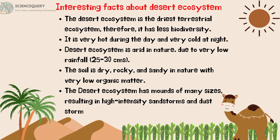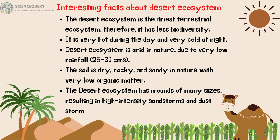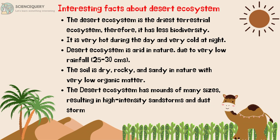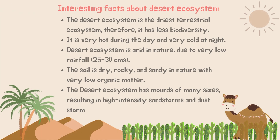Some interesting facts about desert ecosystems: desert ecosystems are the driest terrestrial ecosystem, therefore they have less biodiversity. It is very hot during the day and very cold at night. Desert ecosystems are arid in nature due to very low rainfall, between 25 to 30 centimeters. The soil is dry, rocky and sandy with very low organic matter. The desert ecosystem has mounds of many sizes, resulting in high-intensity sandstorms and dust storms.